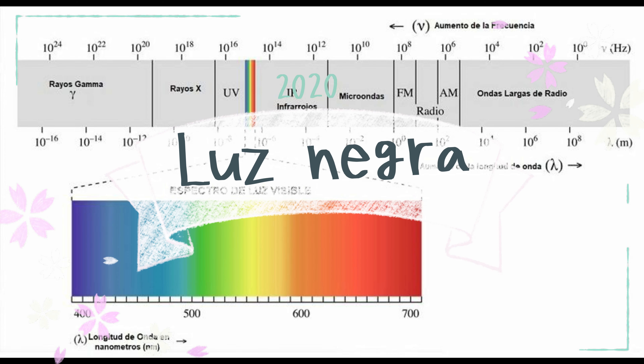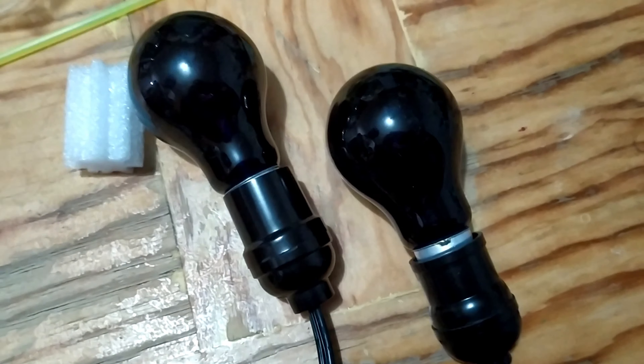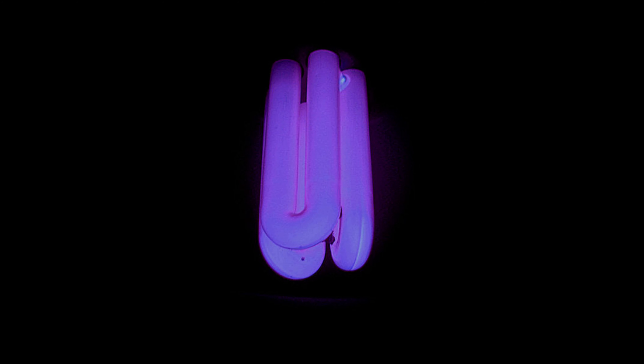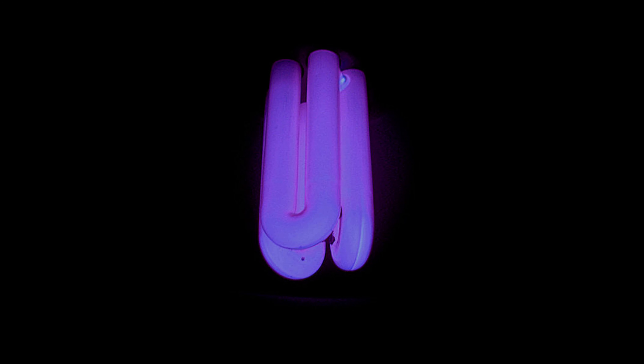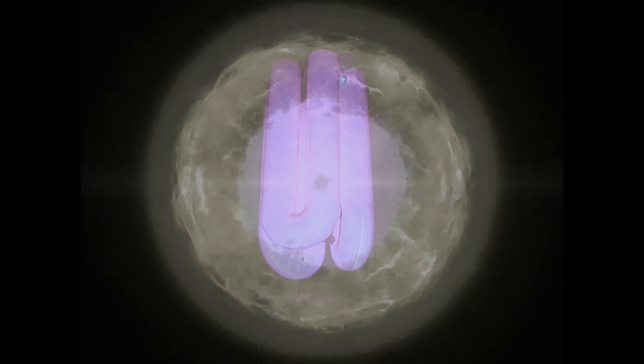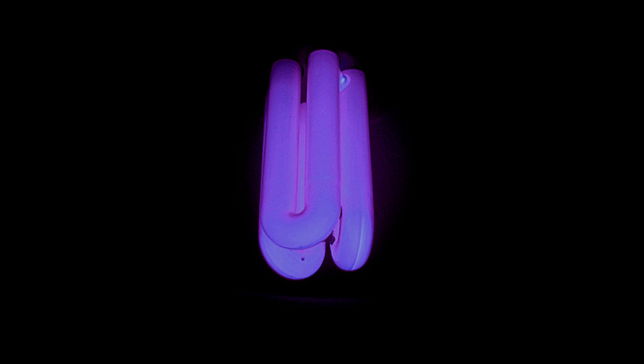La luz negra se obtiene con focos que suelen tener un gas o filamento de mercurio, el cual se calienta y empieza a emitir energía ultravioleta. Esta luz es filtrada por la cobertura de fósforo, que es lo oscuro que vemos en el foquito, y obtenemos un solo tipo de luz ultravioleta que es la tipo A, que no hace más daño que la luz solar normal. Esta se puede utilizar para estudios con el ADN, para detectar billetes falsos, y en nuestro caso la vamos a usar para generar fluorescencia.